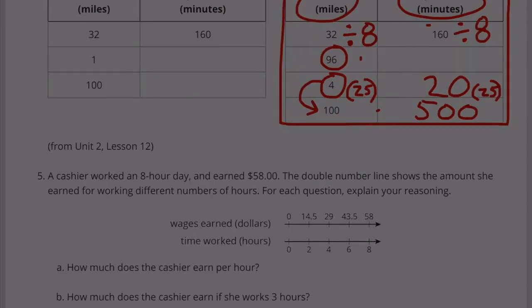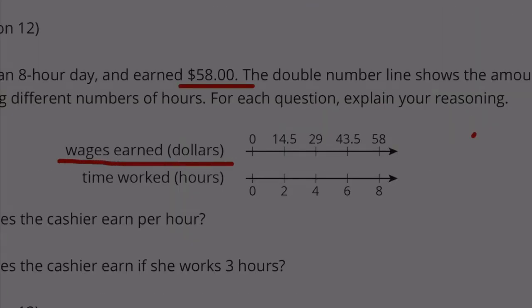Number 5. A cashier worked an 8 hour day and earned $58. The double number line shows the amount she earned for working different numbers of hours. For each question, explain your reasoning.